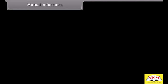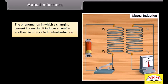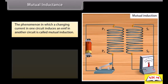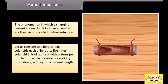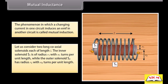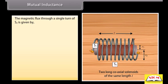Mutual inductance. The phenomenon in which a changing current in one circuit induces an EMF in another circuit is called mutual induction. Consider two long coaxial solenoids each of length L. The inner solenoid S1 has radius R1 with N1 turns per unit length, while the outer solenoid S2 has radius R2 with N2 turns per unit length. The magnetic flux through a single turn of S2 is given by mu₀ N1 pi R1² I1.